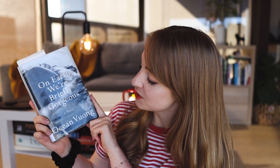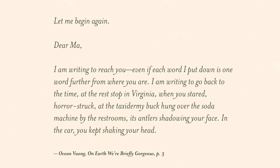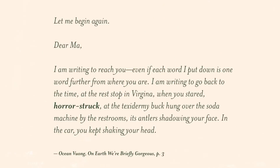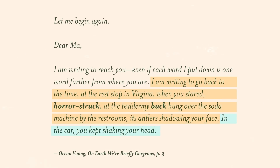For a novel example, take On Earth We're Briefly Gorgeous by Ocean Vuong — an incredibly beautiful book. From the very first page: 'Dear Ma, I am writing to reach you. Even if every word I put down is one word further from where you are. I am writing to go back to the time at the rest stop in Virginia, when you stared horror-struck at the taxidermy buck hung over the soda machine by the restrooms, its antlers shadowing your face. In the car, you kept shaking your head.' With novels, what affects rhythm and meter is the choice of words — 'horror-struck' rhyming with 'buck' — and the use of grammar: the em dash, and having a longer sentence joined by a shorter sentence afterwards changes the speed at which the reader reads. Sentences entirely the same length feel really monotonous, but mixing long, short, and medium sentences affects the cadence.